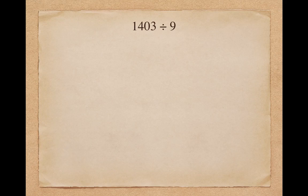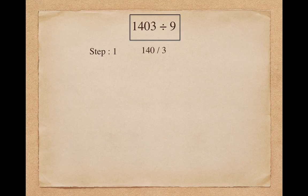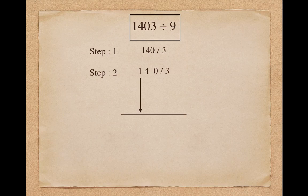Let's take an example of a 4-digit number. Suppose I want to divide 1403 by 9. As a first step I will have to divide 1403 into 140 slash 3. To find the first digit of the quotient, I put 1 as it is. To find the second digit of the quotient, I am adding the previous digit: 4 plus 1 makes 5.